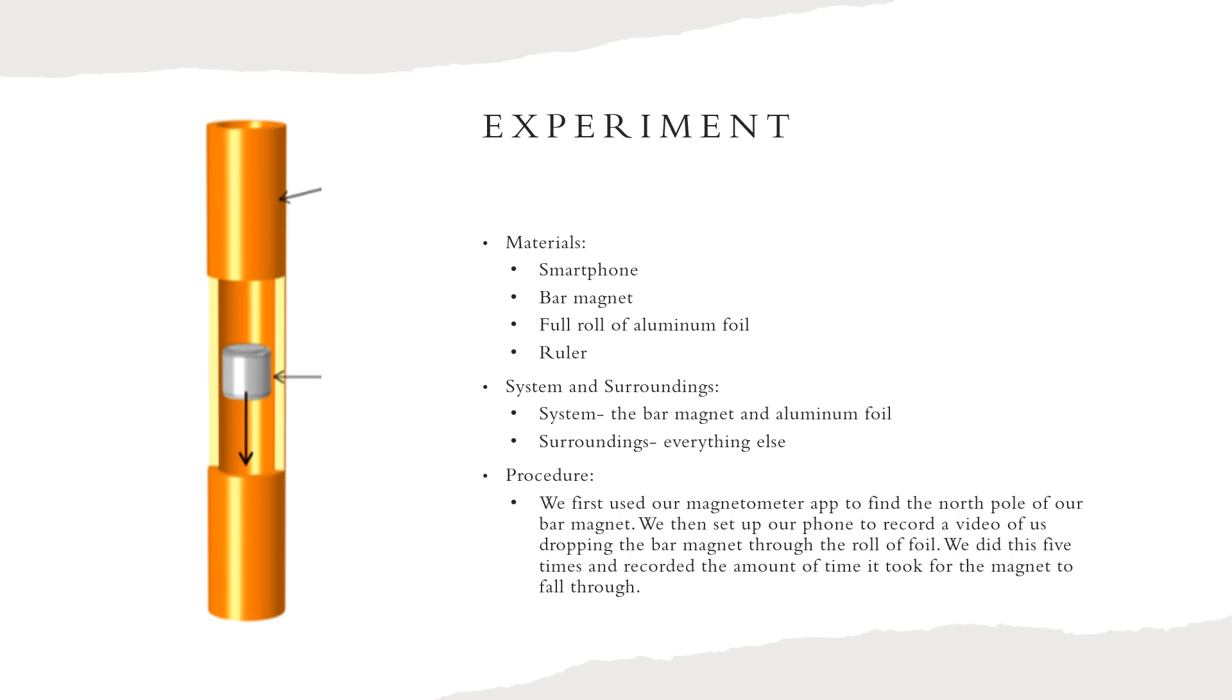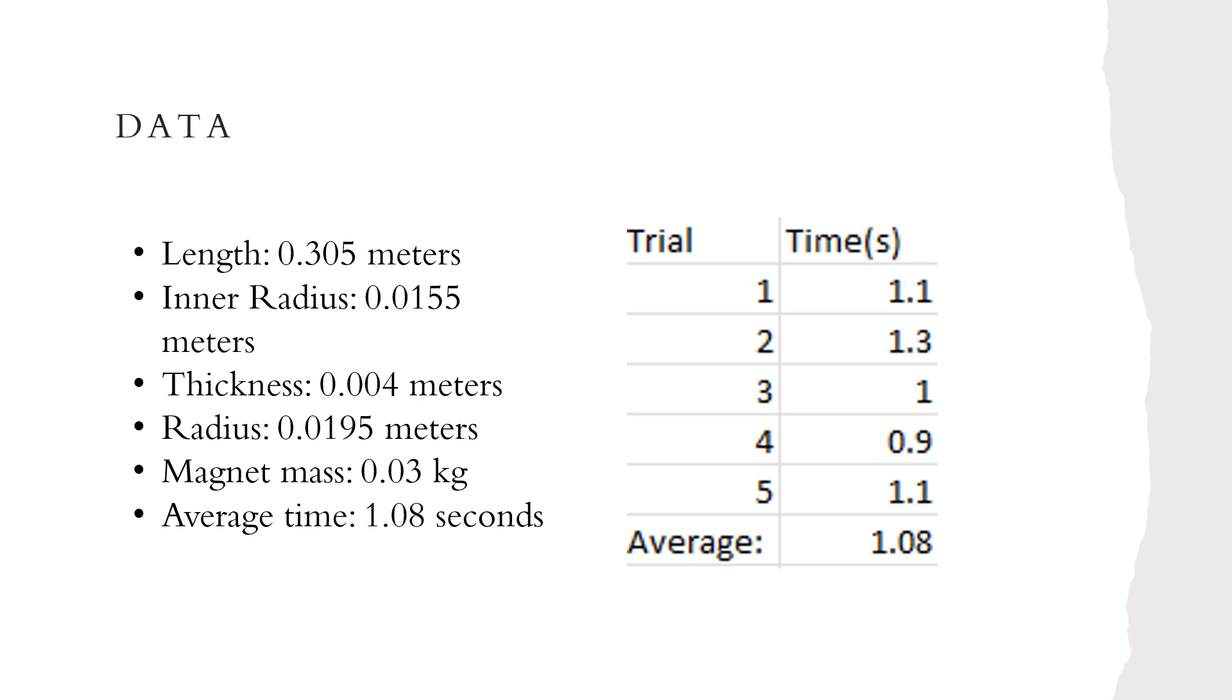With the procedure, we first used our magnetometer app to find the north pole of our bar magnet. We then set up our phone to record a video of us dropping the bar magnet through the roll of foil. We did this five times and recorded the amount of time it took for the magnet to fall through the aluminum foil.